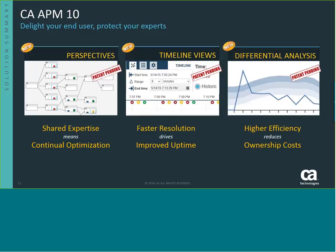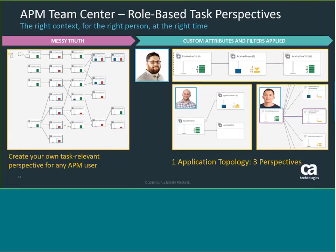Let's focus on APM version 10 and the three marquee capabilities I'll be showing you in the demo. The first is the concept of perspective based on object attributes — giving you capability to look at the world in a way consistent with how you tend to view images and objects. The second is timeline, which allows people to drive for faster resolution and therefore improve uptime. And the third is differential analysis, which provides a mechanism that automates the process of identifying anomalies in application performance.